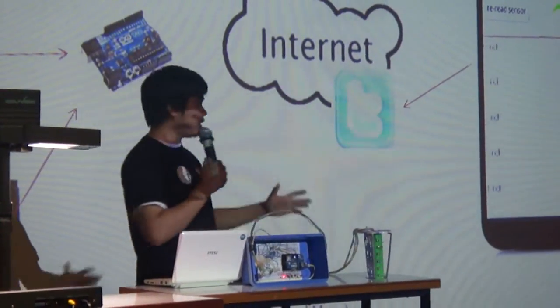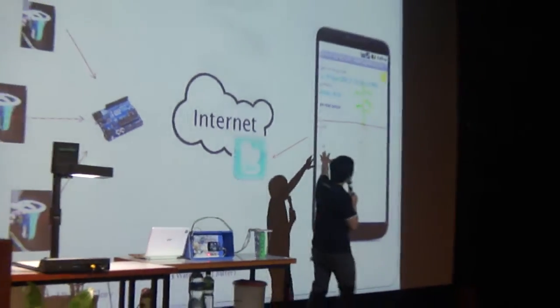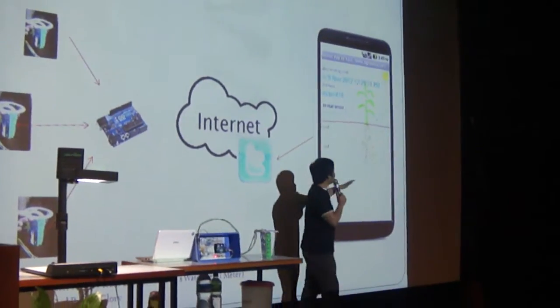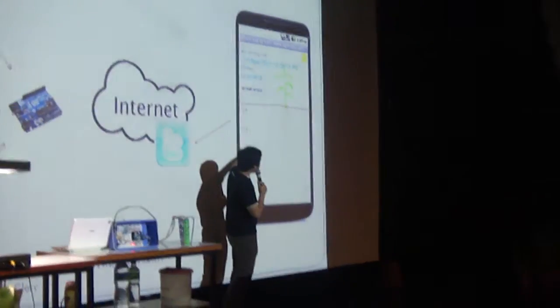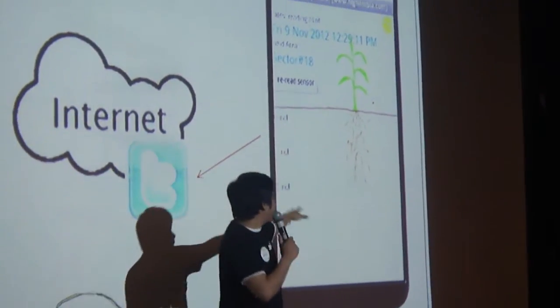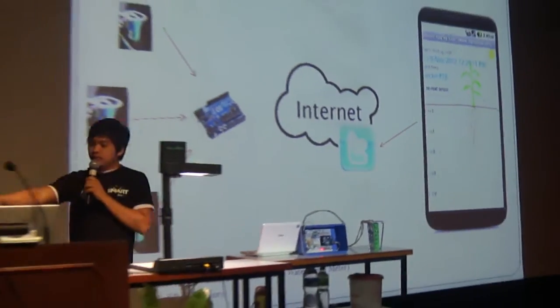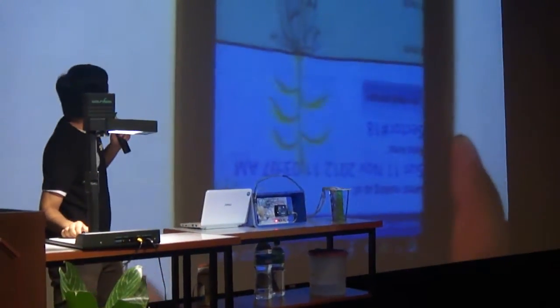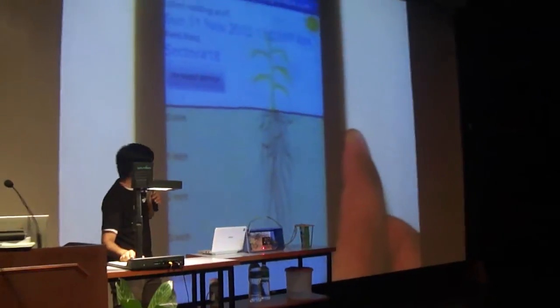So our mobile app can use that data. This is our mobile application. As you can see, we hope that farmers can visually understand this. We can see in our mobile app that this level is color blue, meaning this is the wet part, and the upper is the dry one.